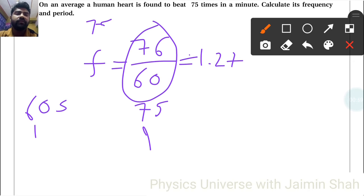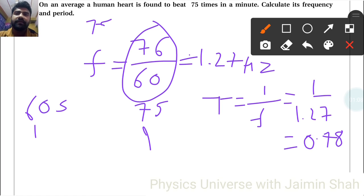So that's 75 upon 60, right? That is frequency in Hertz. Now time period. To find time period, let's take the reciprocal of this frequency: 1 upon 1.27. So 1 upon 1.27, that is 0.787 seconds. So this is the time period.